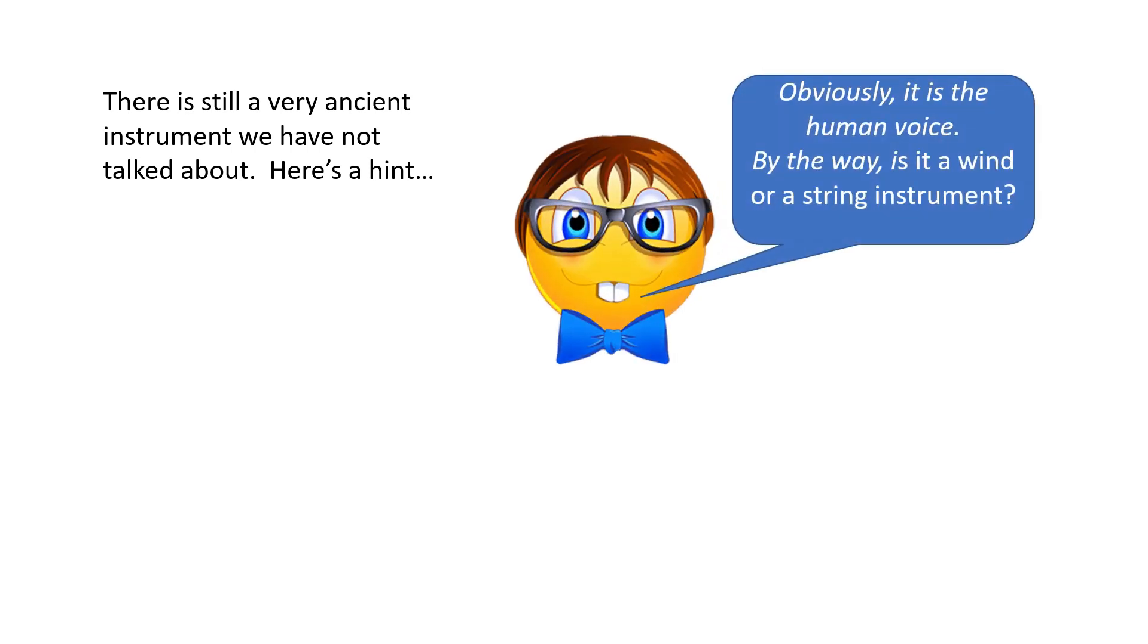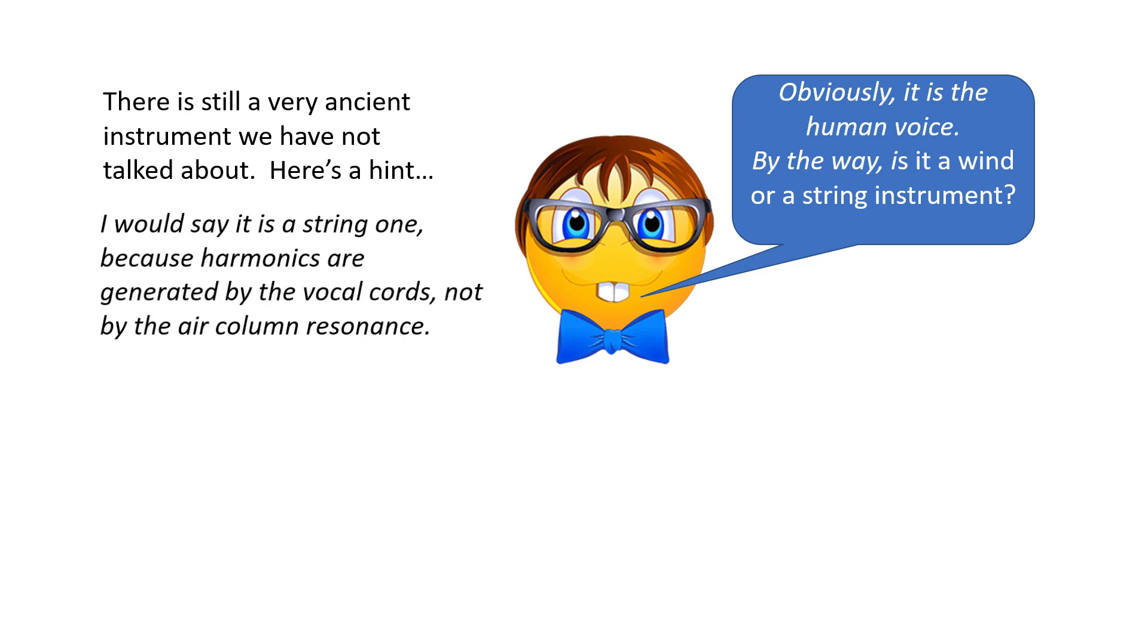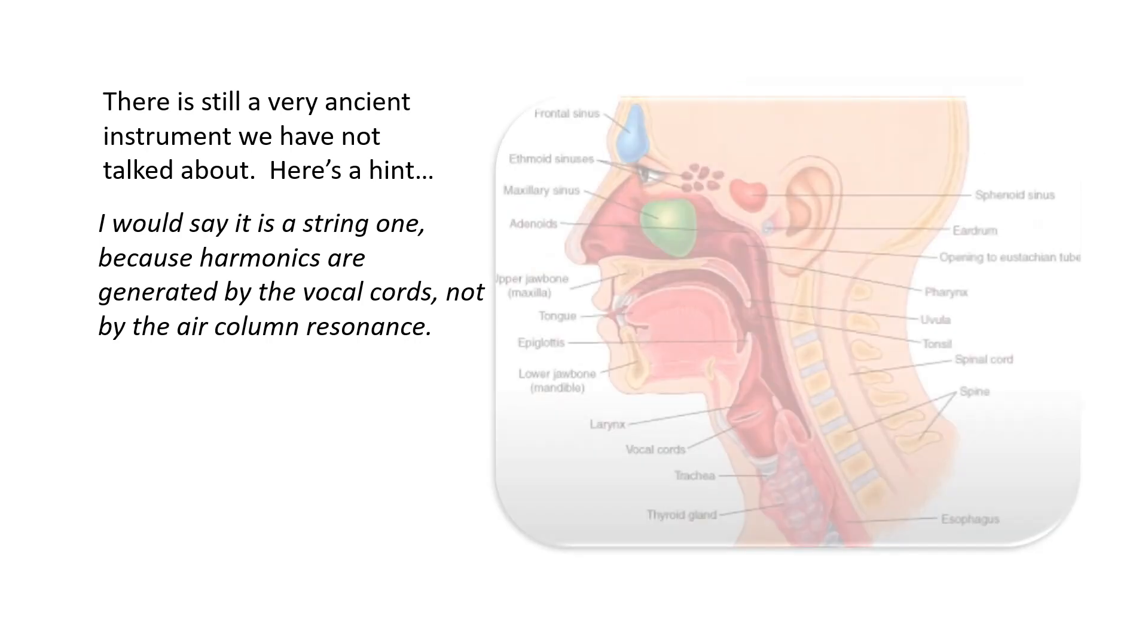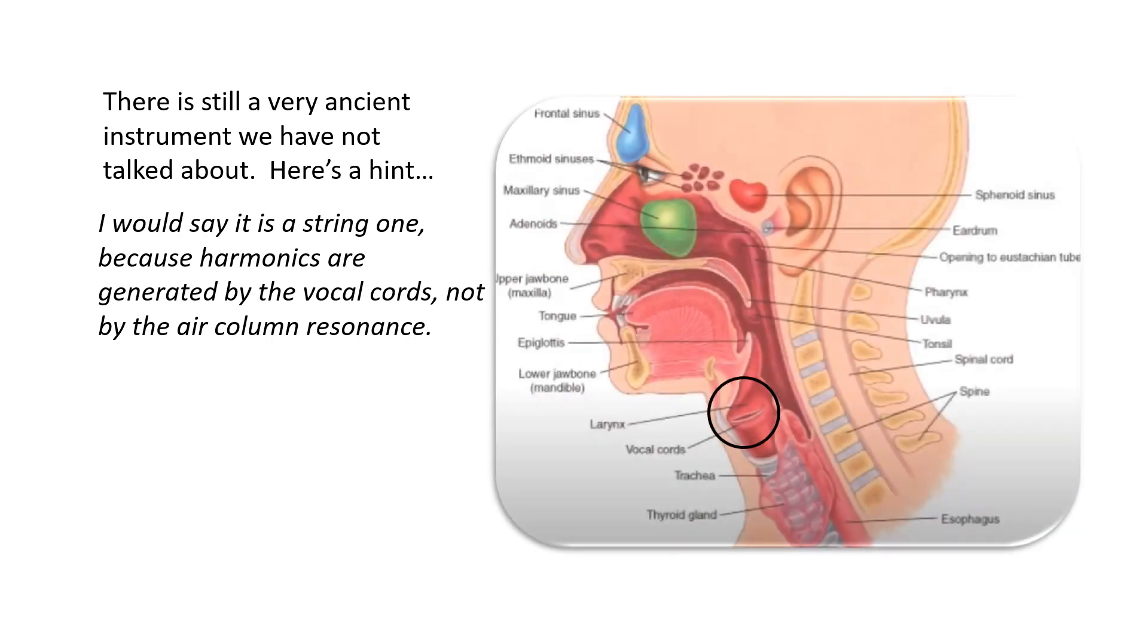Obviously it's the human voice. By the way, is it a wind or string instrument? I would say it's a strange one, because harmonics are generated by the vocal cords and not by air column resonance. Just as the violin's body, the larynx mouth cavity enhances some harmonics while others are attenuated, and that changes the spectrum of the voice.